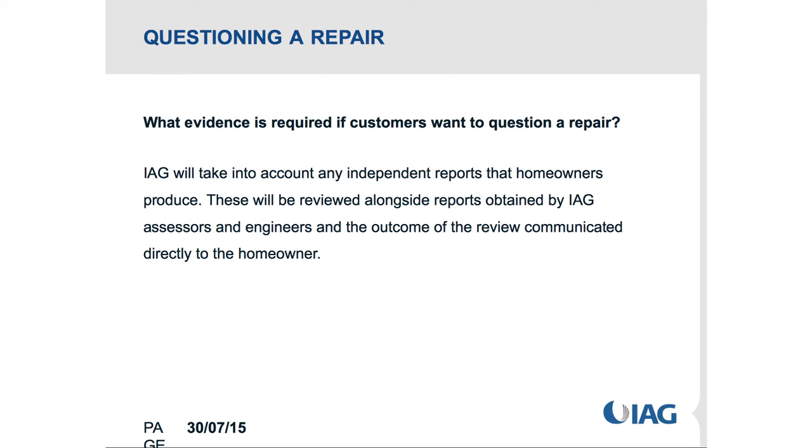On questioning a repair - one of the questions was what evidence is required if customers want to question a repair. We will take into account any independent reports that a homeowner has, and these are reviewed alongside any reports that we have. We'll generally get a quantity surveyor to review both reports, and if you have a report that differs from ours and it changes the outcome of the claim and you paid to get your own report, then we'll reimburse you for that. For example, if your engineer's report of $5,000 changes a repair to a rebuild, or a $300,000 repair to a $500,000 repair, we reimburse the cost.